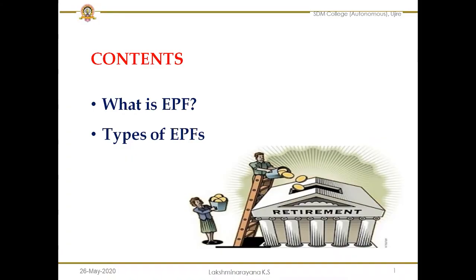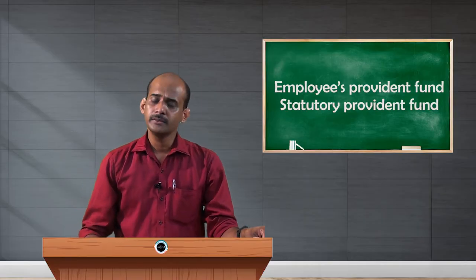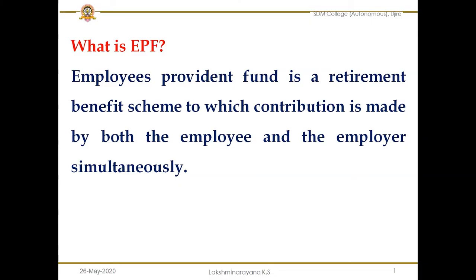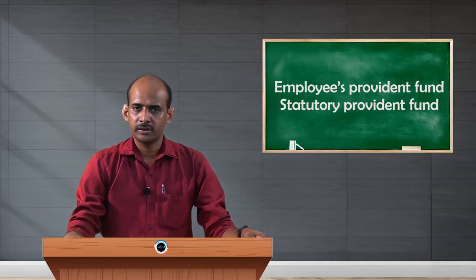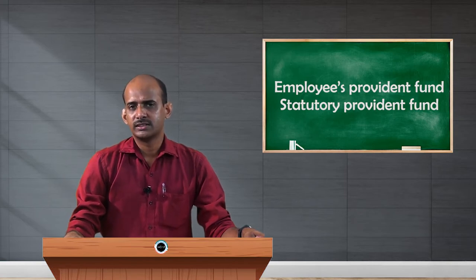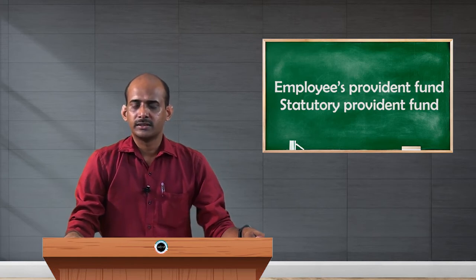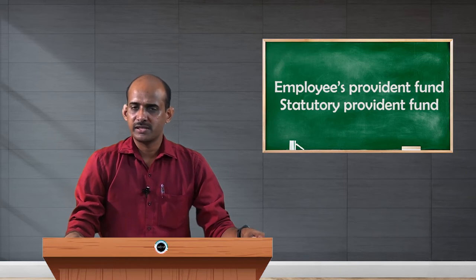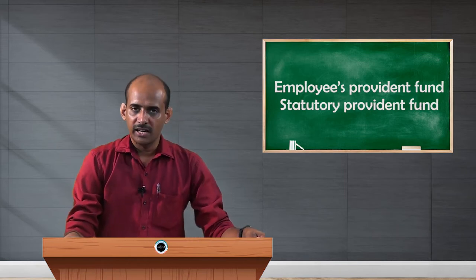In this video I will take up two important issues: first, what is EPF, and then the types of EPFs — the first type being the Statutory Provident Fund. EPF is a retirement scheme which gives the employee financial security and stability at the age of retirement. This Employees Provident Fund is a retirement benefit scheme to which contributions are made by both employer and employee simultaneously. Every month a certain specified amount based on basic pay and dearness allowance is deducted from the employee's salary and credited to a specific PF account, and an equal amount is credited to the same account by the employer as well.